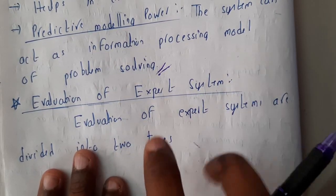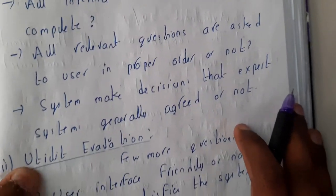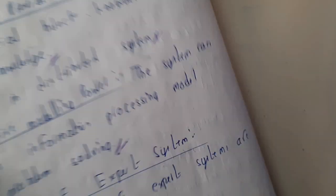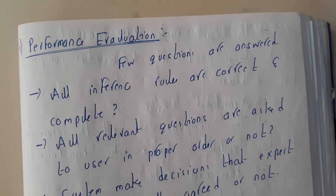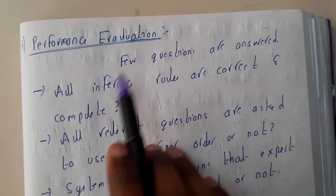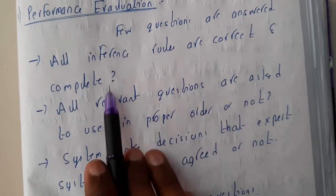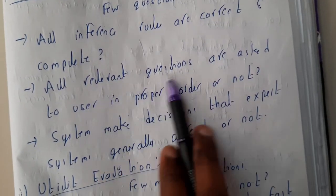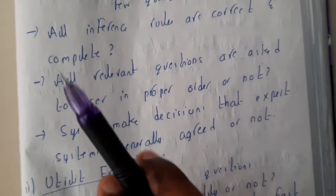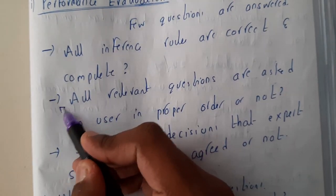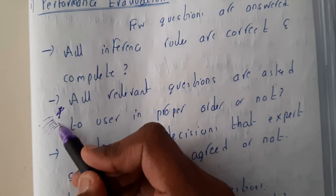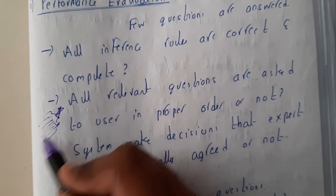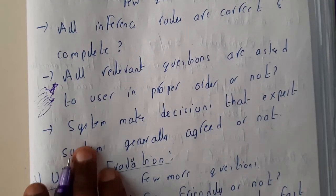The evaluation of expert systems is divided into two types: performance and utility. Performance means observing how it is doing. A few questions are asked — for example, are all inference rules correct and complete? Are all relevant questions asked to the user in a proper order? This point is really important — the questions should be asked in proper order, because if the order is shuffled, there could be many issues in the expert system.